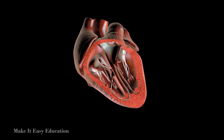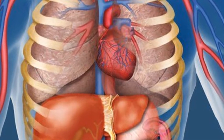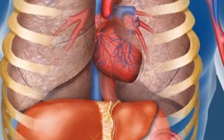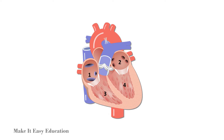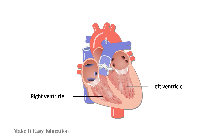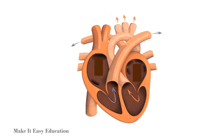The heart is a muscular organ that pumps blood to all parts of our body. It is located between the lungs, slightly to the left of the middle of the chest, and is protected by the ribcage. The heart consists of four chambers: two upper chambers called the right atrium and left atrium, and two lower chambers called the right ventricle and left ventricle.